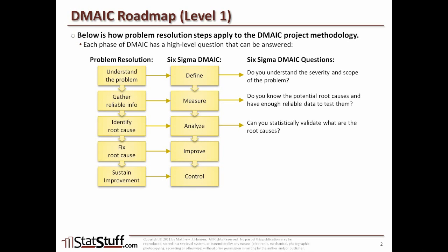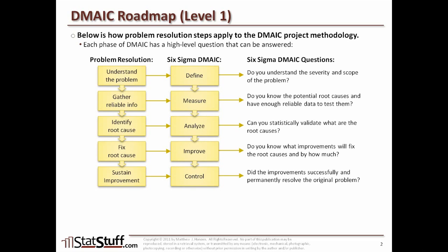Once we can answer that, we move on to the Improve phase where we're trying to fix the root cause. At that phase, the big question we're trying to ask ourselves is: do you know what improvements will fix the root causes and by how much? Once we know the improvements identified and exactly how much those improvements will fix the root causes and we've got them implemented, then in the final Control phase — where we're trying to sustain the improvement — the top-level question is: did the improvement successfully and permanently resolve the original problem? If we cannot answer yes to that, chances are we have not finished the project. We have to ask ourselves: can we really successfully say that we have eliminated and eradicated those root causes completely? Once we can say yes, then we can consider the project completely finished.